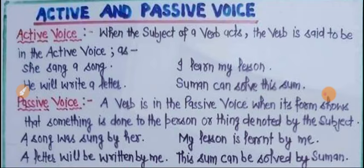Passive voice کیا ہوگا: A verb is in the passive voice when its form shows that something is done to the person or thing denoted by the subject. جب اس کی حالت یہ دکھاتا ہے کہ کچھ ہوا ہے ایک شخص یا ایک چیز کے ساتھ۔ مثلاً: A song was sung by her۔ My lesson is learnt by me۔ A letter will be written by me۔ This sum can be solved by someone۔ یہاں پر something ہے جو ہوا ہے — something is done — تو یہی passive voice ہے۔